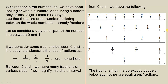Let us consider a very small part of the number line between 0 and 1. If we consider some fractions between 0 and 1, it is easy to understand that such fractions as a half, a third, two thirds, three quarters, etc. exist here. Between 0 and 1 we have many fractions of various sizes. If we magnify this short interval from 0 to 1, we have the following.